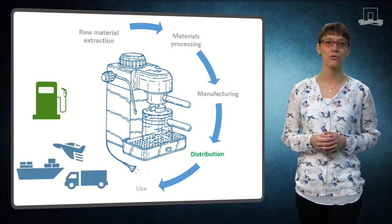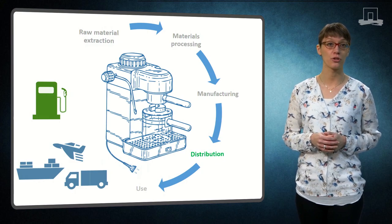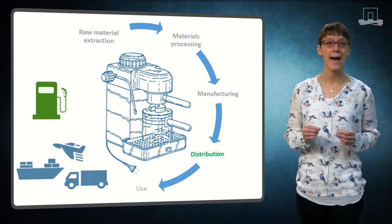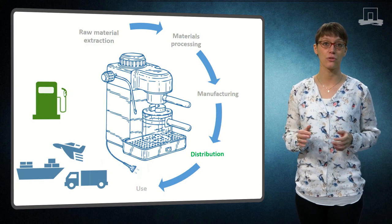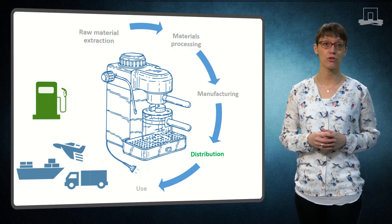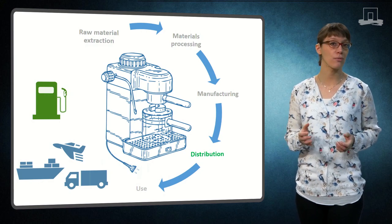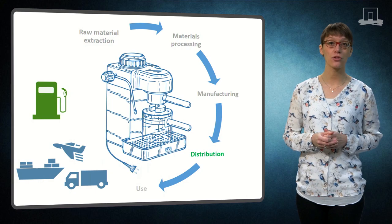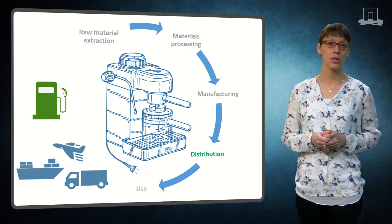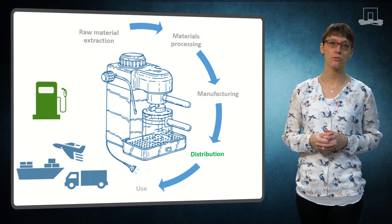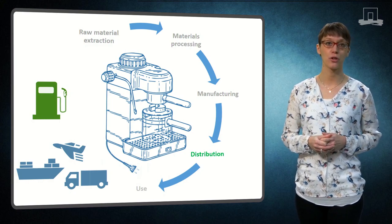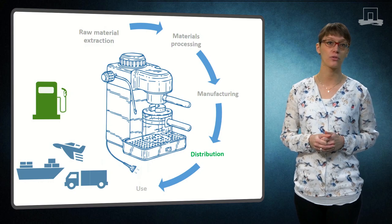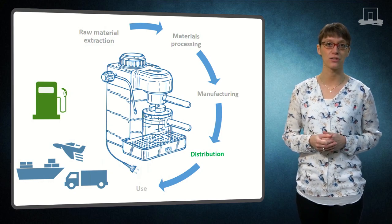Let's move to the fifth stage, the distribution stage. This tells you how the product and its resources were distributed or transported. This can be done by car, truck, ship, or plane. Each transportation mode requires other types of fuels and they have different emissions.